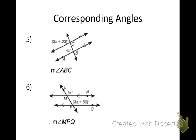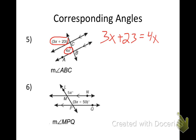Now it's going to get a little bit tougher. Let's look at this — I need to find angle ABC but I'm just given an expression. What do I know about these two angles? They're corresponding angles, which means they're going to be equal. So I set them equal: 3X + 23 = 4X. Now I solve for X — subtract 3X — and I get X = 23.